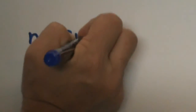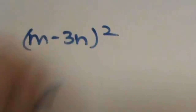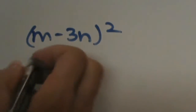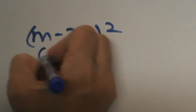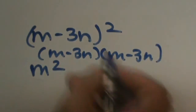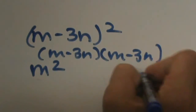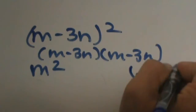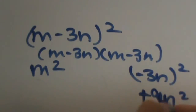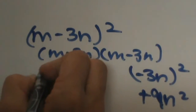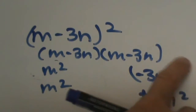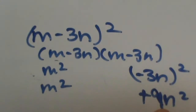We have m minus 3n. Now we have a subtraction, so there is a little more to think about with the signs. You can write it out as m minus 3n times m minus 3n if it helps. The first term is m squared, and then taking negative 3n and squaring it gives us positive 9n squared.